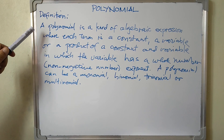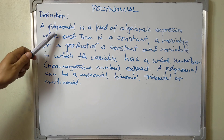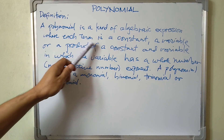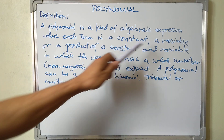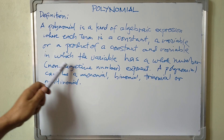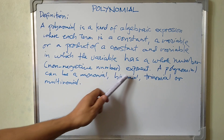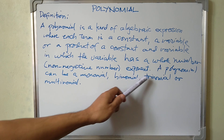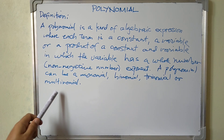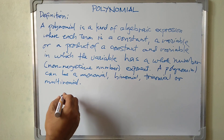Let's start with this definition of a polynomial. A polynomial is a kind of algebraic expression where each term is a constant, a variable, or a product of a constant and variable in which the variable has a whole number or non-negative number exponent. A polynomial can be monomial, binomial, trinomial, or multinomial.